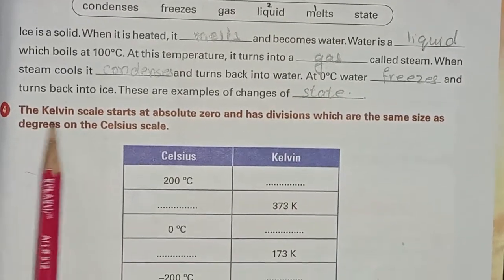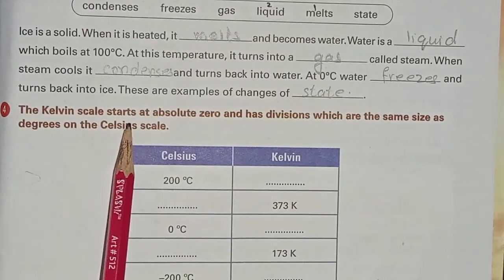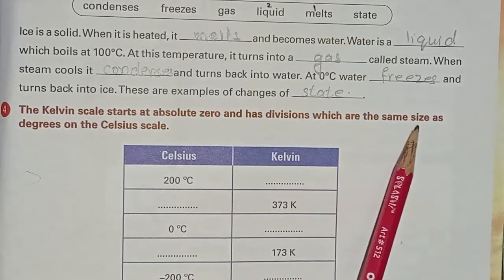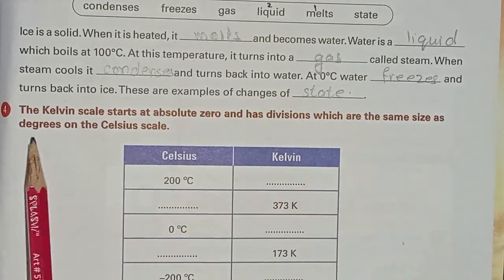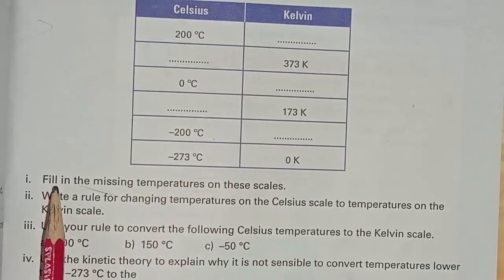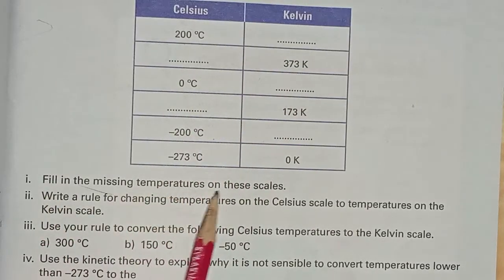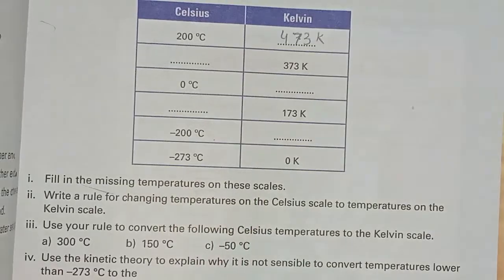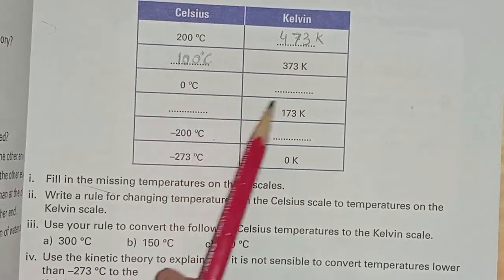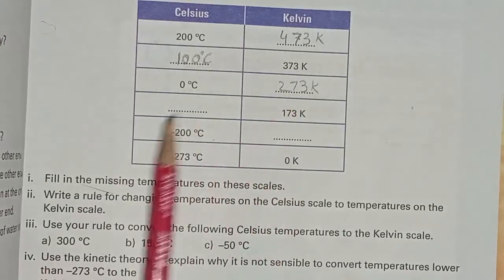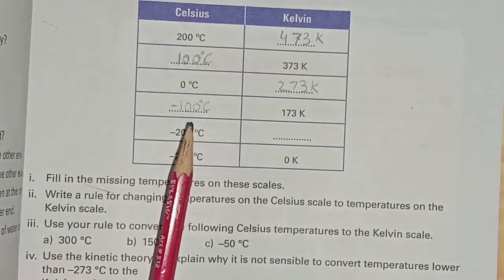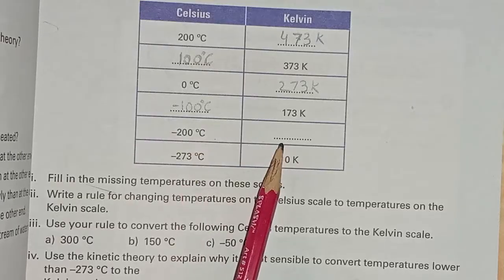4th question: the Kelvin scale starts at absolute zero and has divisions which are the same size as degrees on the Celsius scale. Fill in the missing temperatures on the table. We write 473 Kelvin, here we write 100 degrees Celsius, next we write 273 Kelvin, and this blank we write minus 100 degrees Celsius.